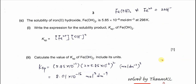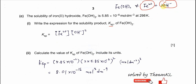Part C: the solubility of iron(II) hydroxide is 5.85 × 10⁻⁶ mol dm⁻³ at 298 K. Write the expression for the solubility product Ksp. Start with the dissociation equation: Fe(OH)₂ dissociates to form Fe²⁺ and 2OH⁻. Therefore, Ksp = [Fe²⁺][OH⁻]². Make sure to square the hydroxide concentration because the coefficient is 2.